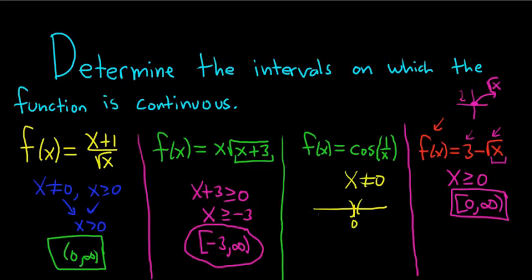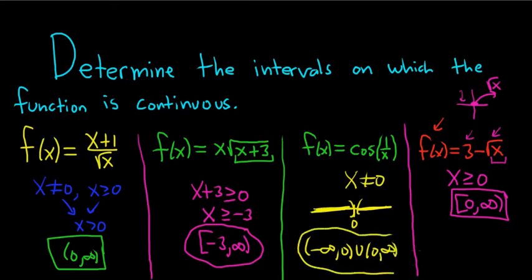So it'd be everything except 0. So the answer here would be negative infinity to 0, union 0 to infinity. That would be the domain of the function, and that would be where it's continuous. That's it.